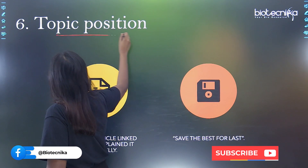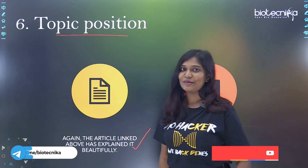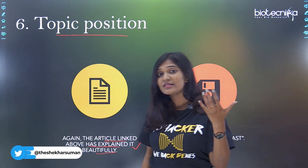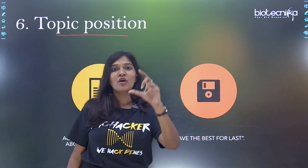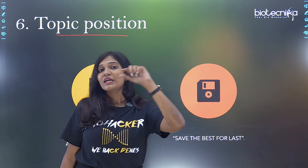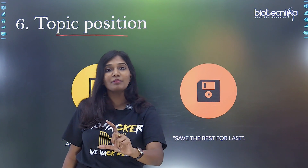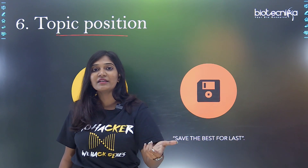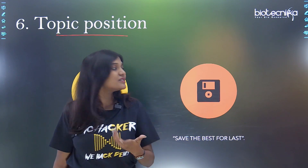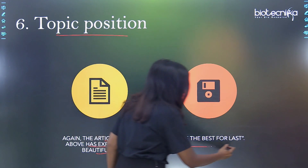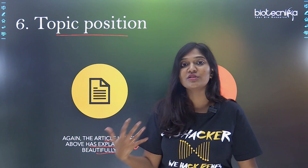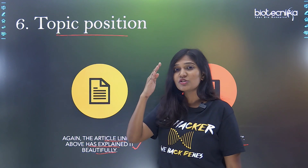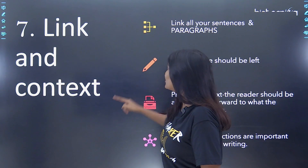The next concept: topic positions. You can also write like this — 'Again, the article linked above has explained it very beautifully.' The reader thinks: what are they trying to say in the next sentences or paragraph? If the first paragraph talks about the situation in the U.S. and the second talks about India, with coherence between them and a question like 'will this be the scenario in the next decade?' — readers will save the best for the last and read to the end of the article.